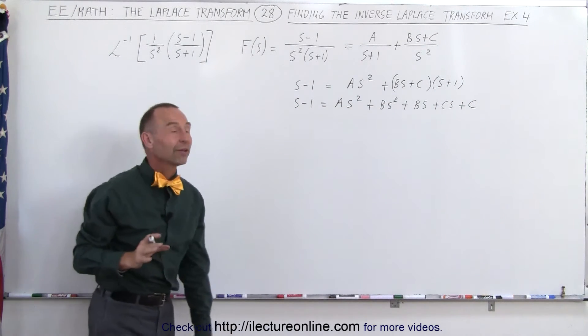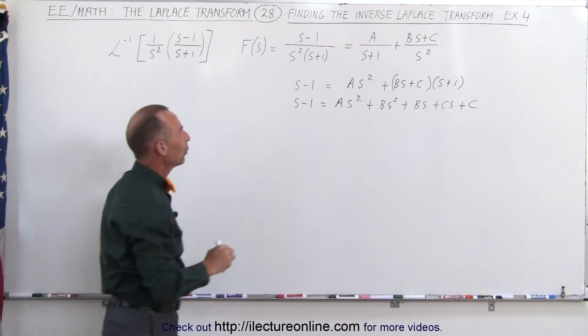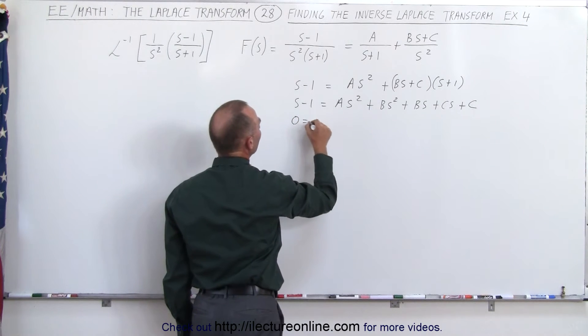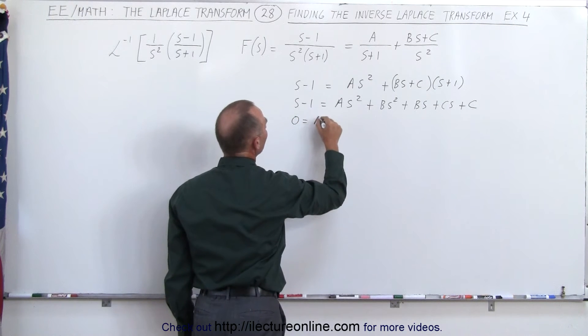Now we're ready to try to find A, B, and C. First of all, we don't have an s squared term on the left, we have two of them on the right, which means zero equals the two coefficients A plus B.